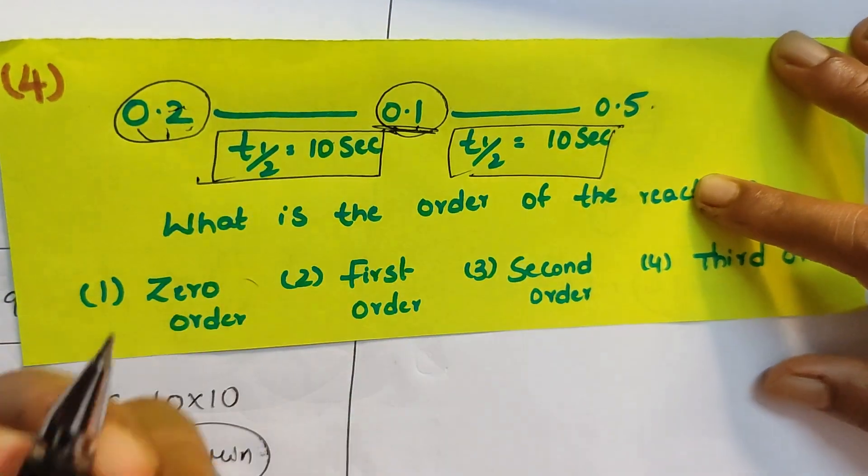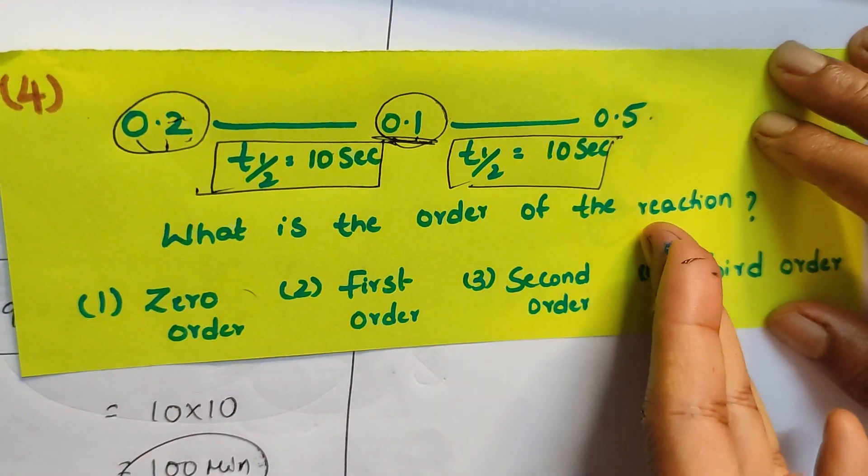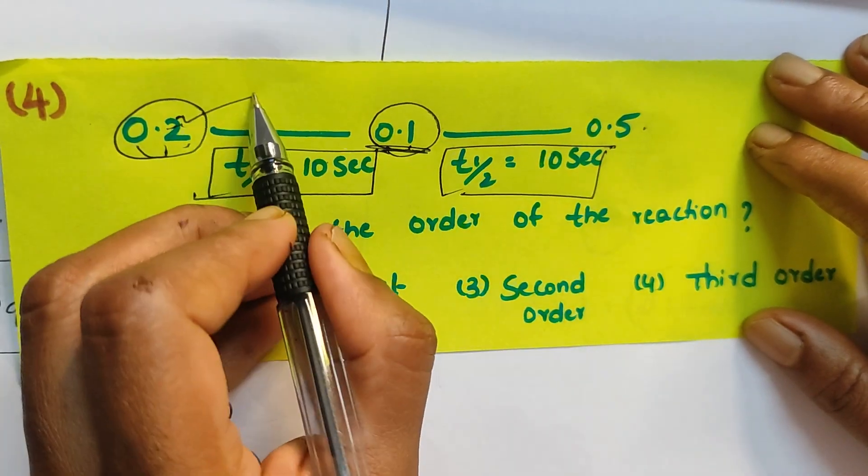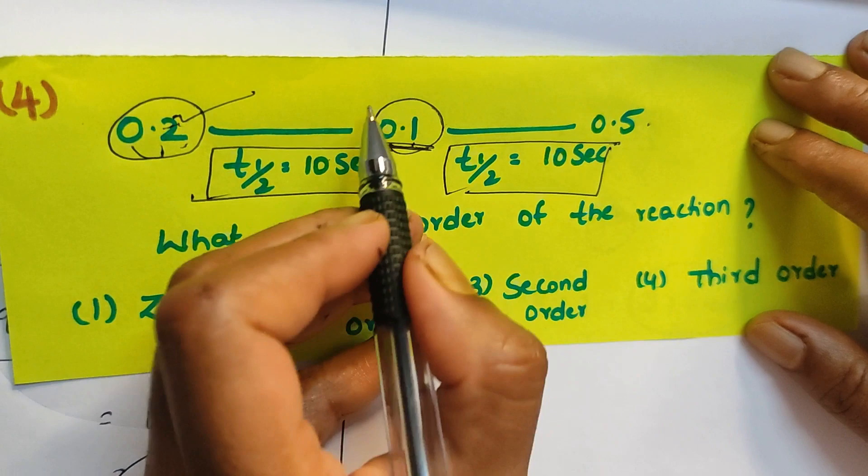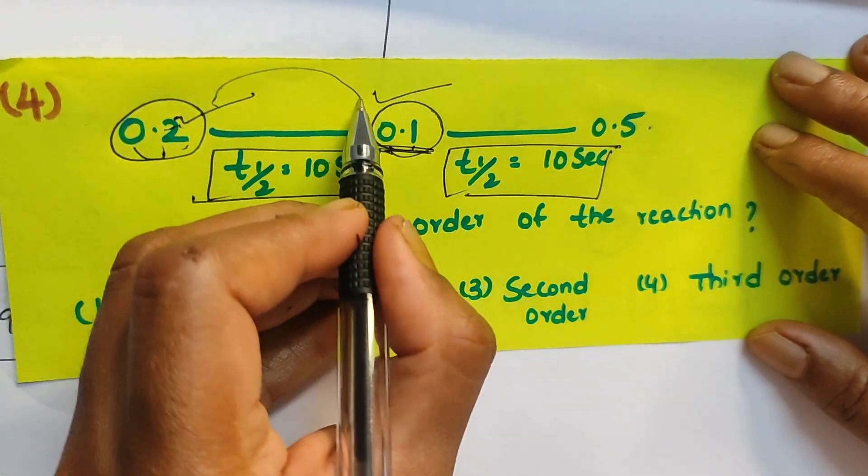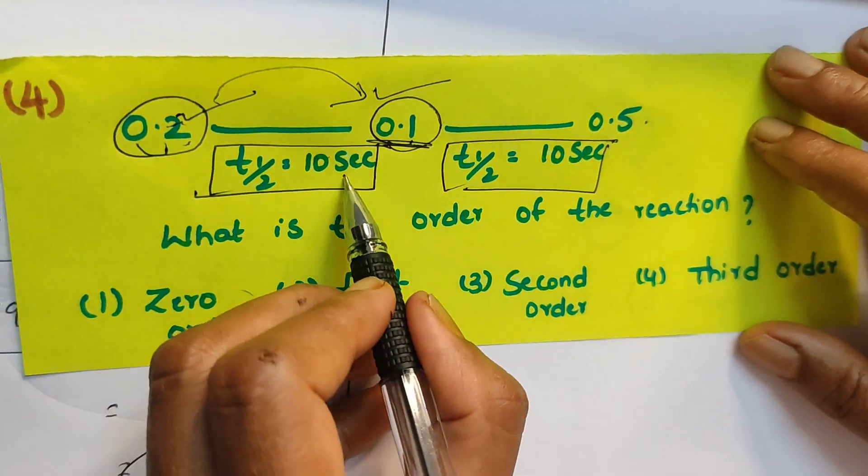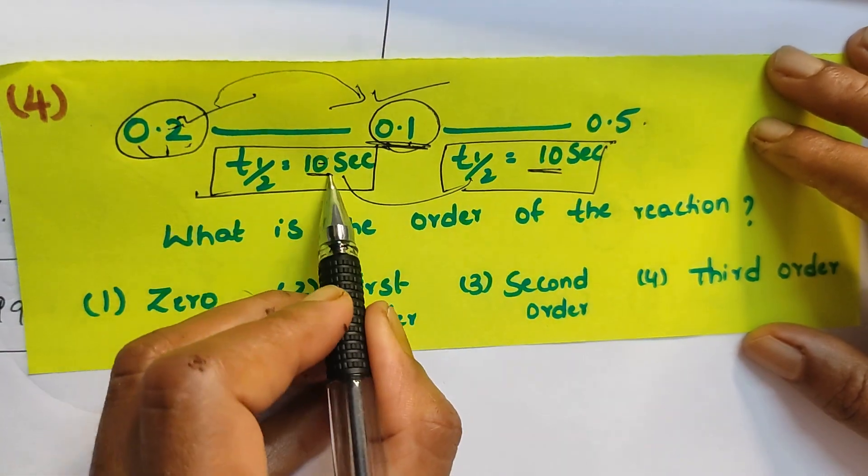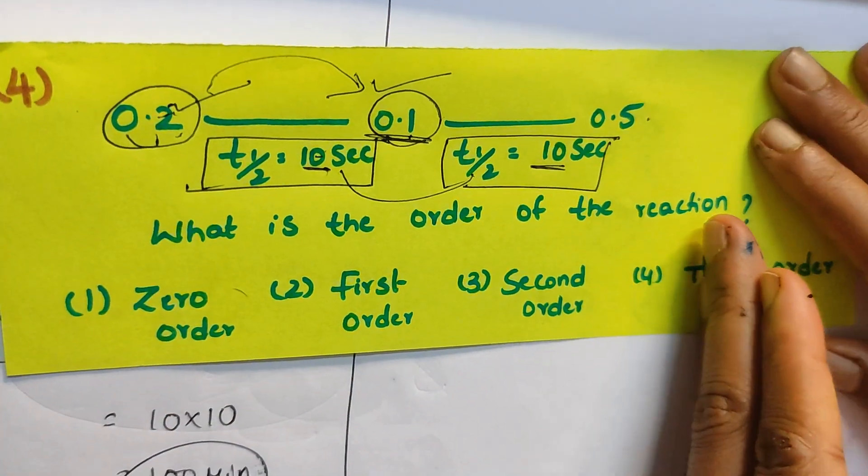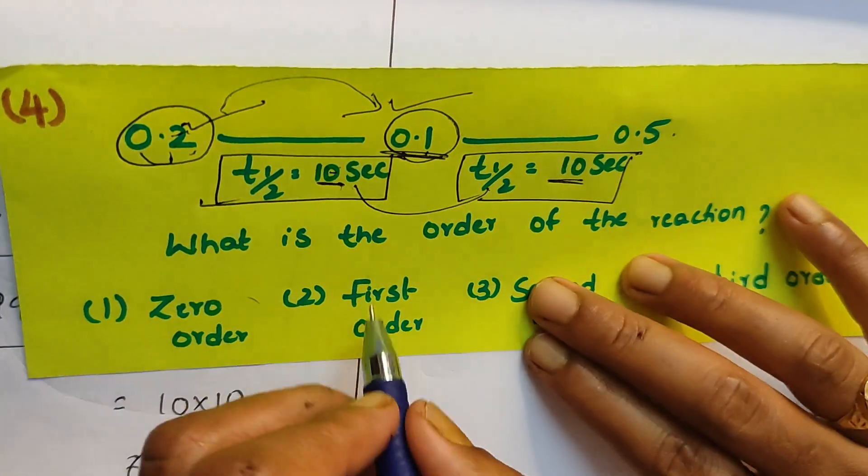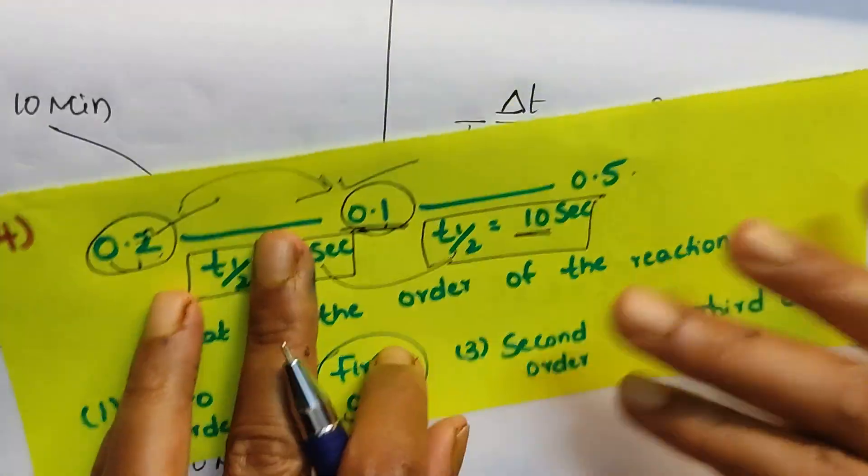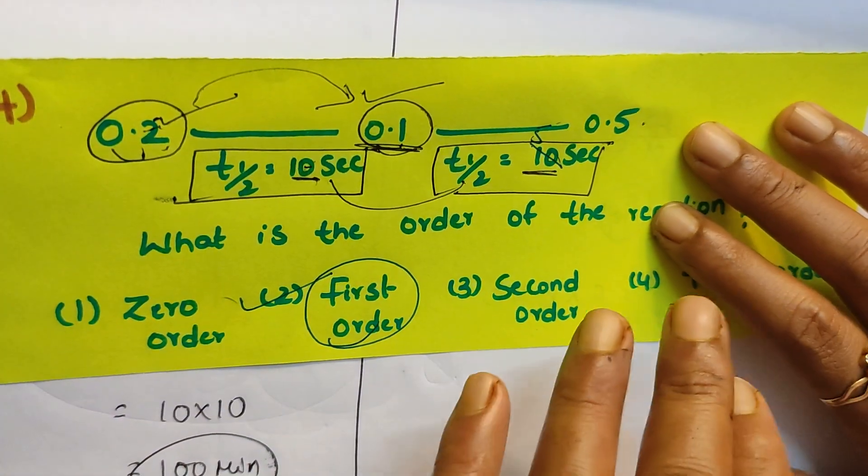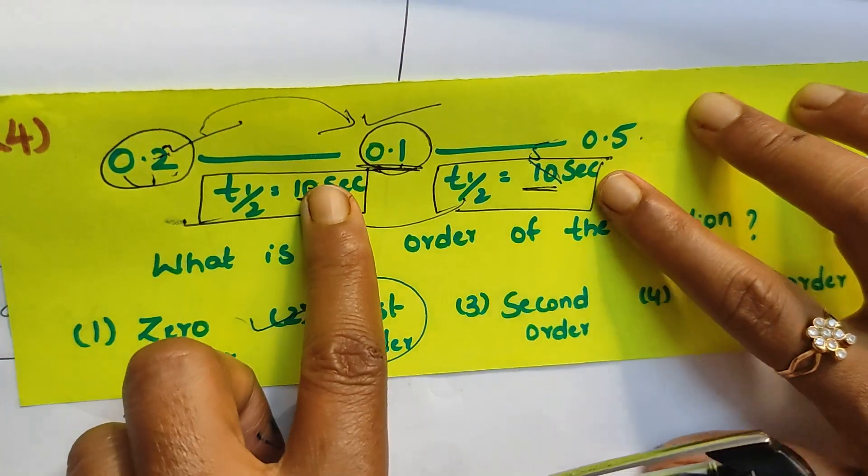If you observe carefully, they have changed the initial concentration from 0.2 to 0.1, so initial concentration becomes half. But t half, no change, which means that t half is same. T half is independent of initial concentration, then the order of a reaction is first order. For example, if it is 5, then it is zero order reaction because if you make initial concentration half, t half also becomes half.